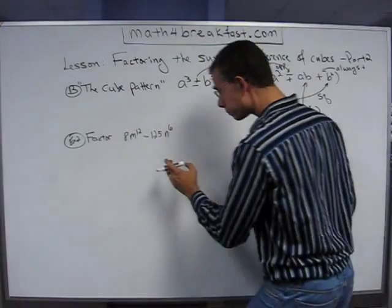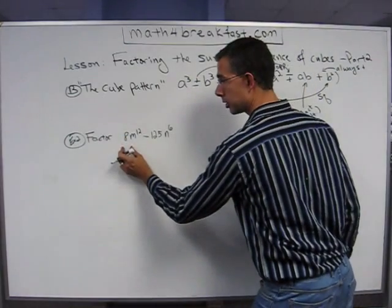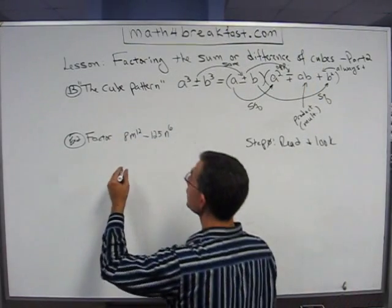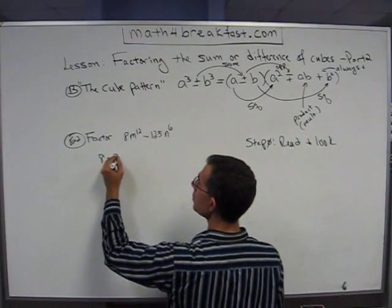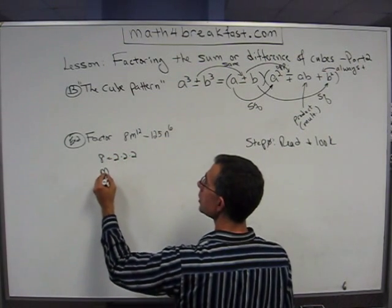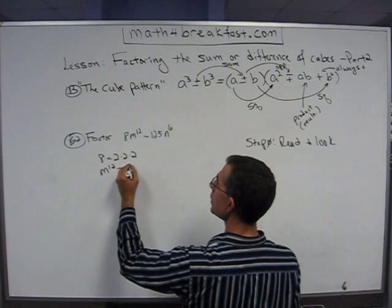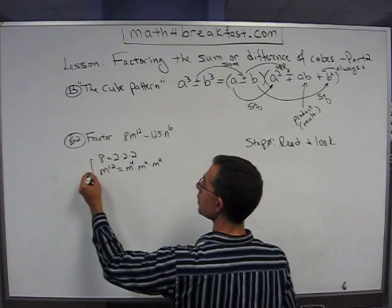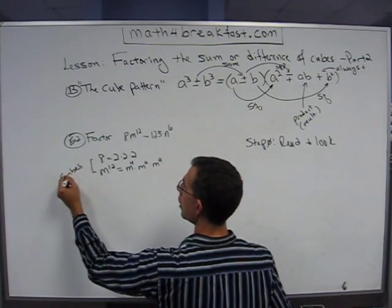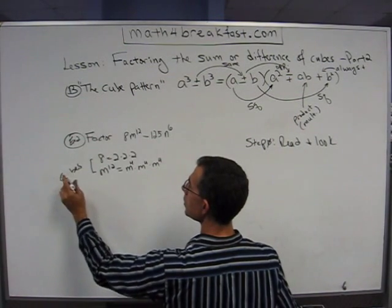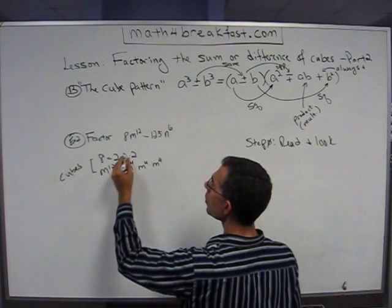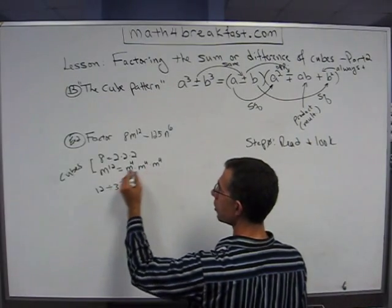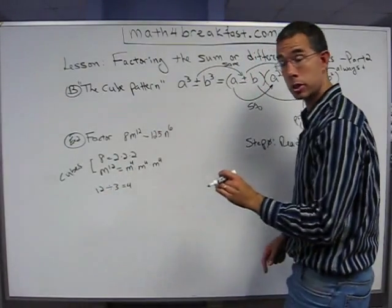And let's dig into that. 8 equals 2 times 2 times 2, and m to the 12th is equal to m to the 4th times m to the 4th times m to the 4th. These are cubes. I know because I can take the 12th, divide it by 3, and I get 4. That's how I got my 4 on each of these. That's how I know that m to the 12th is a cube.